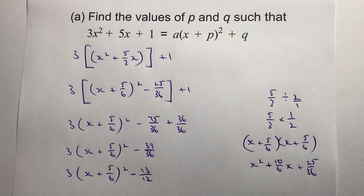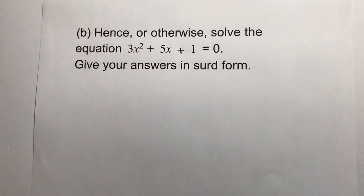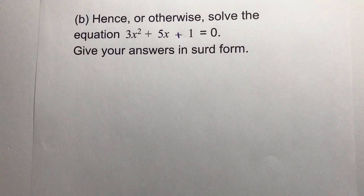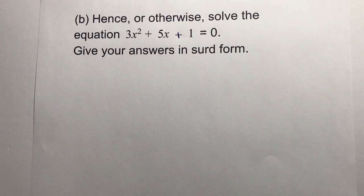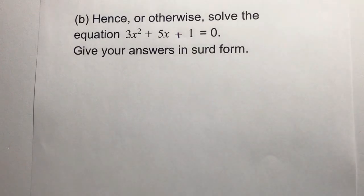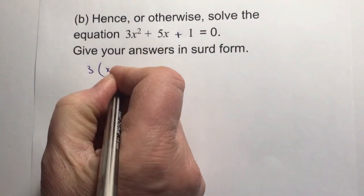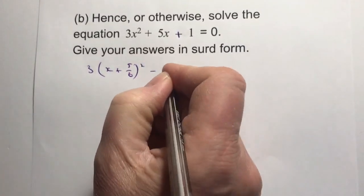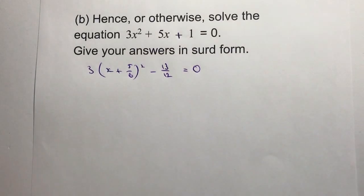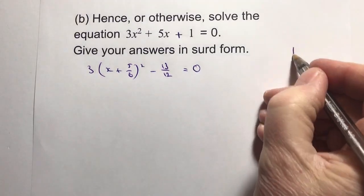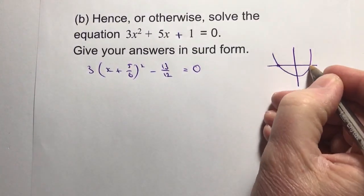In the next part of the video we're looking at taking this information and using it to solve. We've got part B, which is: hence or otherwise solve the equation and give your answers in surd form. We've done all of that work with completing the square, so we might as well use that. You could use the quadratic formula at this point because it says 'or otherwise', but let's carry on with completing the square.